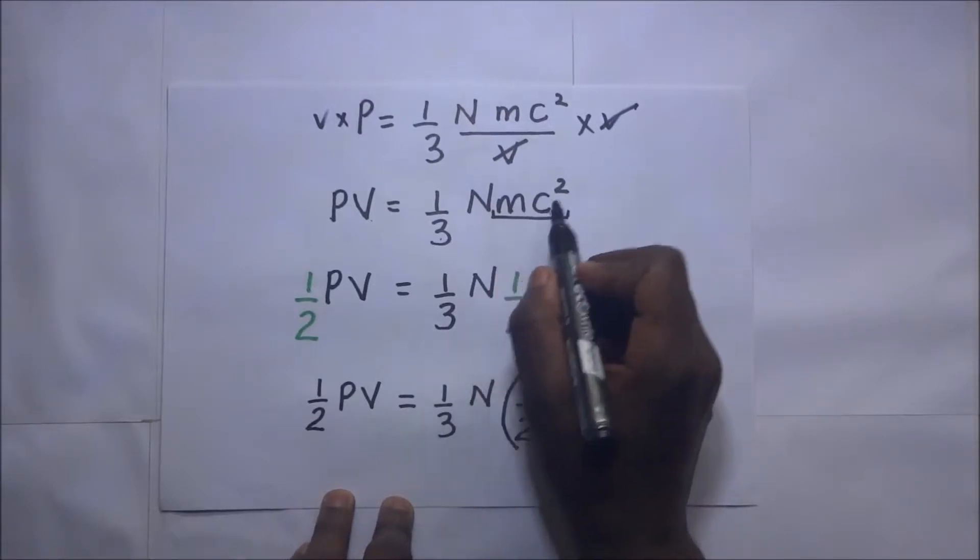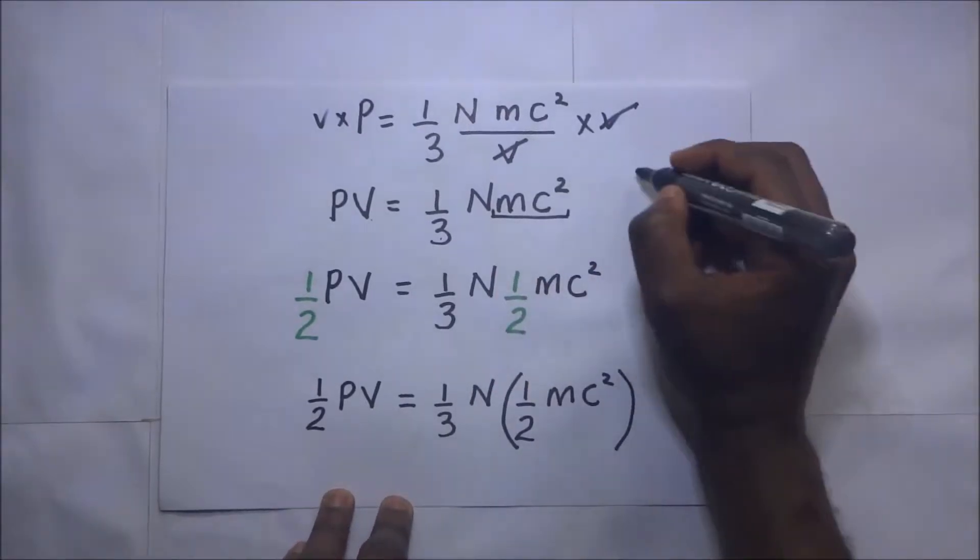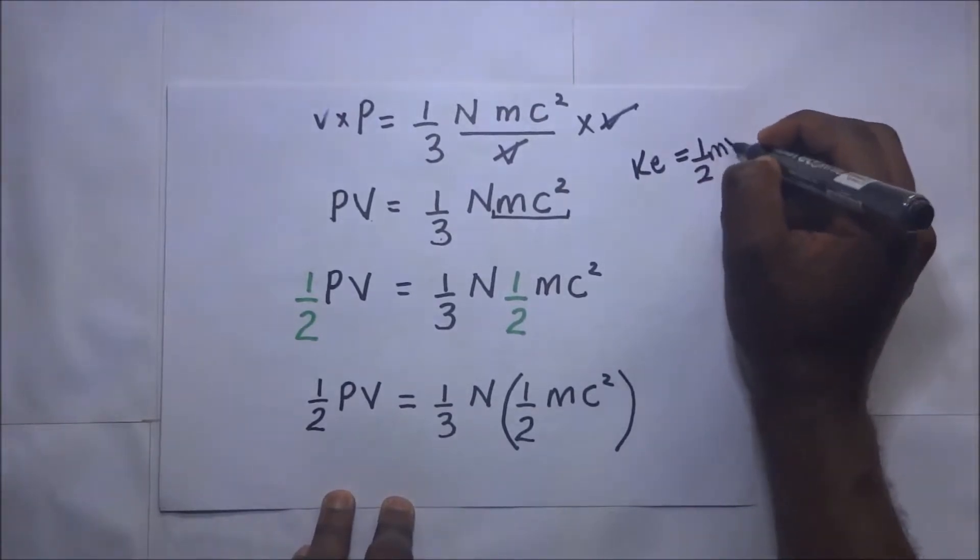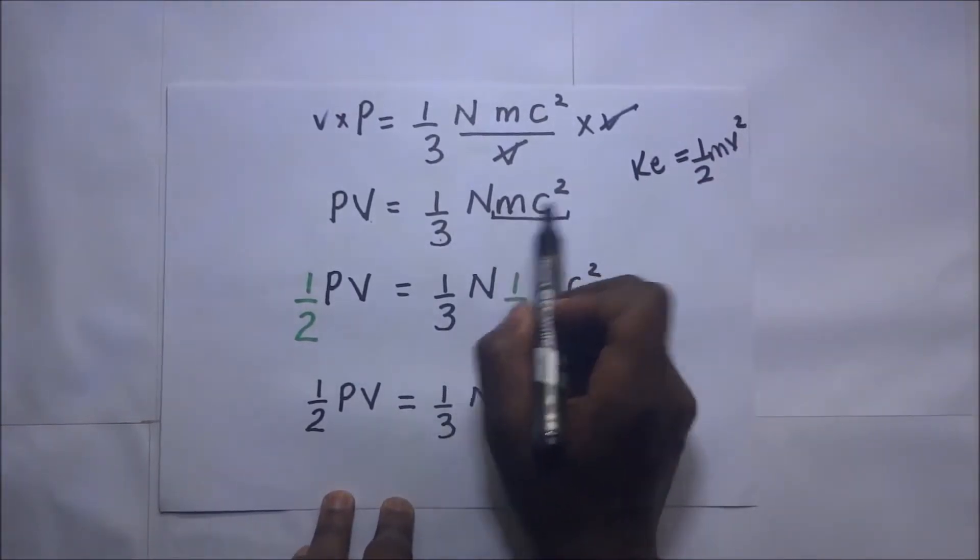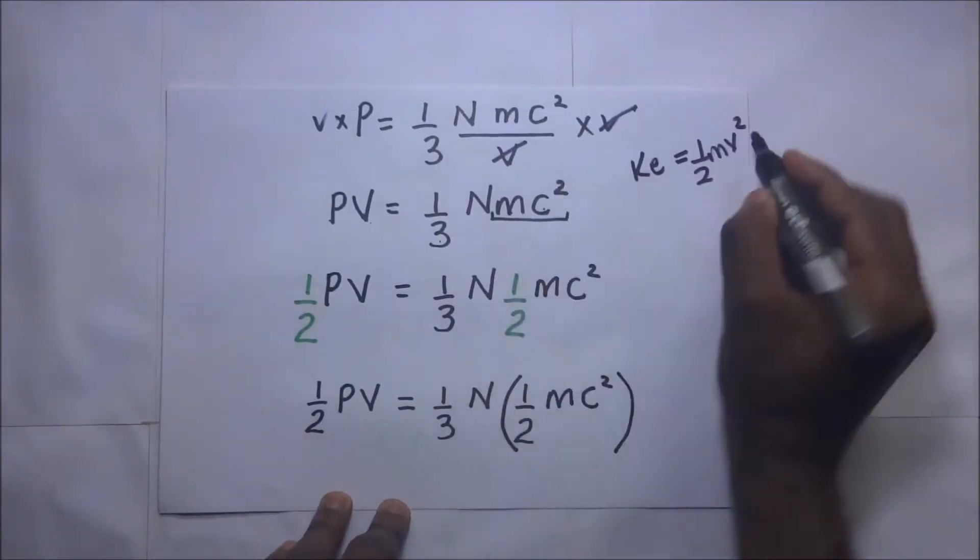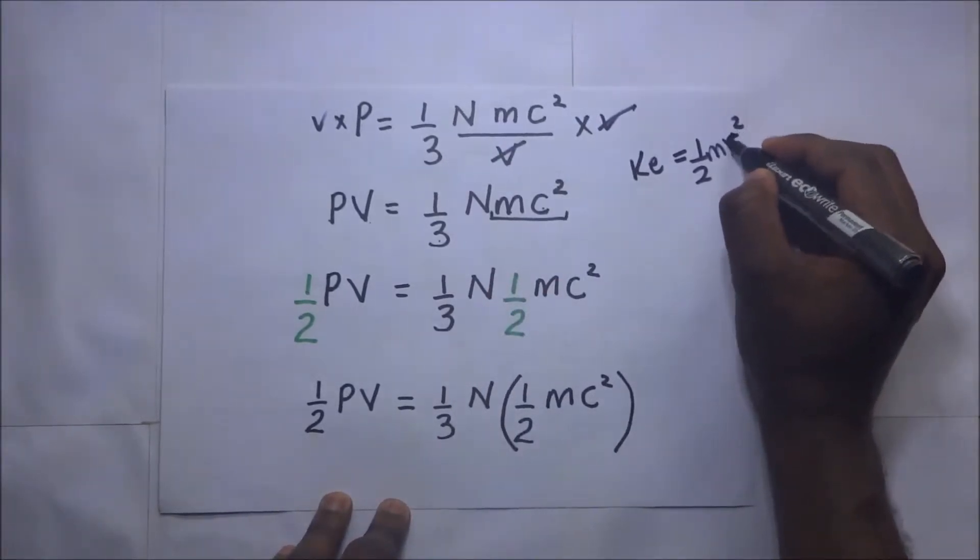it's mass times velocity squared. But you know that the kinetic energy is given by one-half times mass times velocity squared. And if you look at this expression, we only have mass times c squared. C is the velocity here, this velocity is c squared.